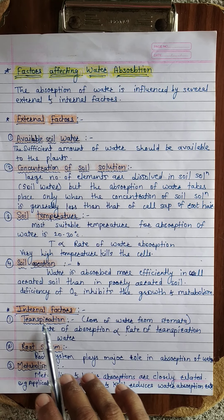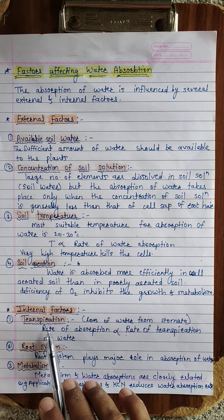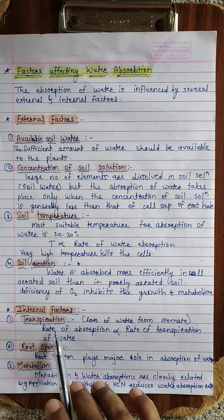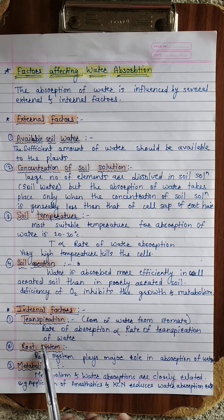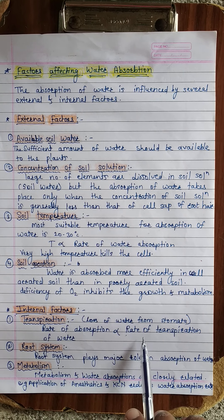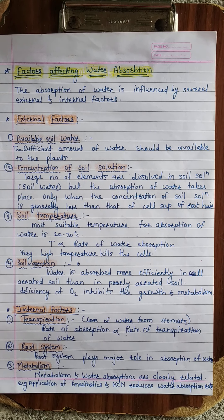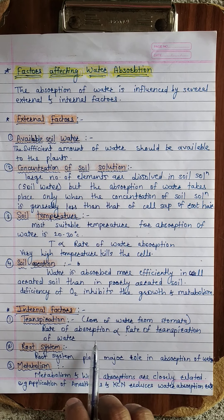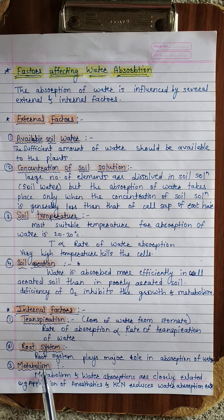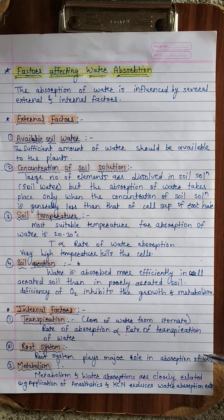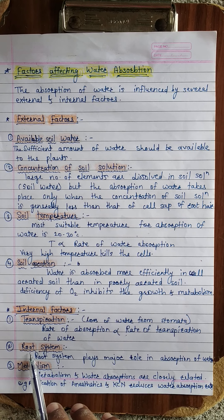Next are the internal factors. The first is transpiration — the loss of water from the stomata or aerial parts of the plant. The rate of absorption is directly proportional to the rate of transpiration. The second internal factor is the root system, which plays a major and important role in the absorption of water.